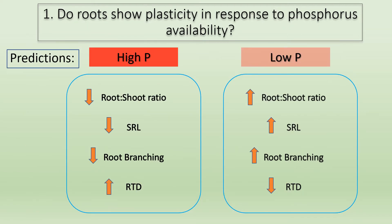The first question I am exploring is: how does contrasting phosphorus levels affect root allocation and root trait expression? Under high phosphorus conditions, I predict there will be a decrease in root allocation — a lower root-to-shoot ratio — and plants will express roots with less absorptive capacity due to higher nutrient abundance, so lower specific root length, lower degree of root branching, and higher root tissue density. Under low phosphorus environments, there should be an increase in root allocation and plants will express roots with higher absorptive capacity, associated with traits like higher SRL, higher branching, and lower RTD.